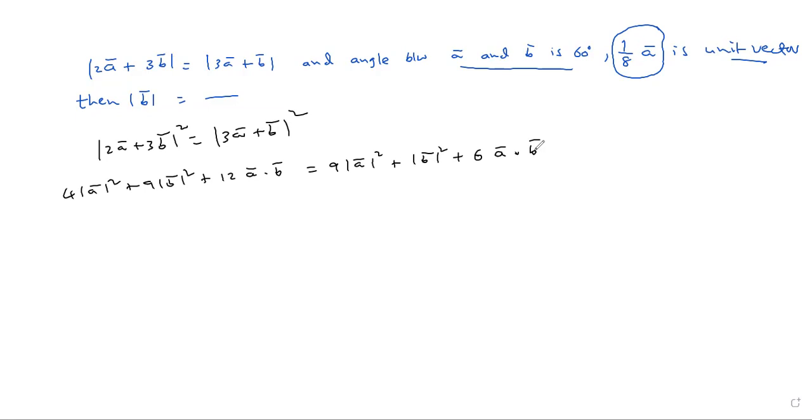And given angle between A and B is 60 degrees, and 1/8 A bar is unit vector. Unit vector means modulus is 1. So, if you apply mod at 1/8 A bar, you get 1. That is the concept. Next, angle between A and B is 60. Apply A dot B form as this.